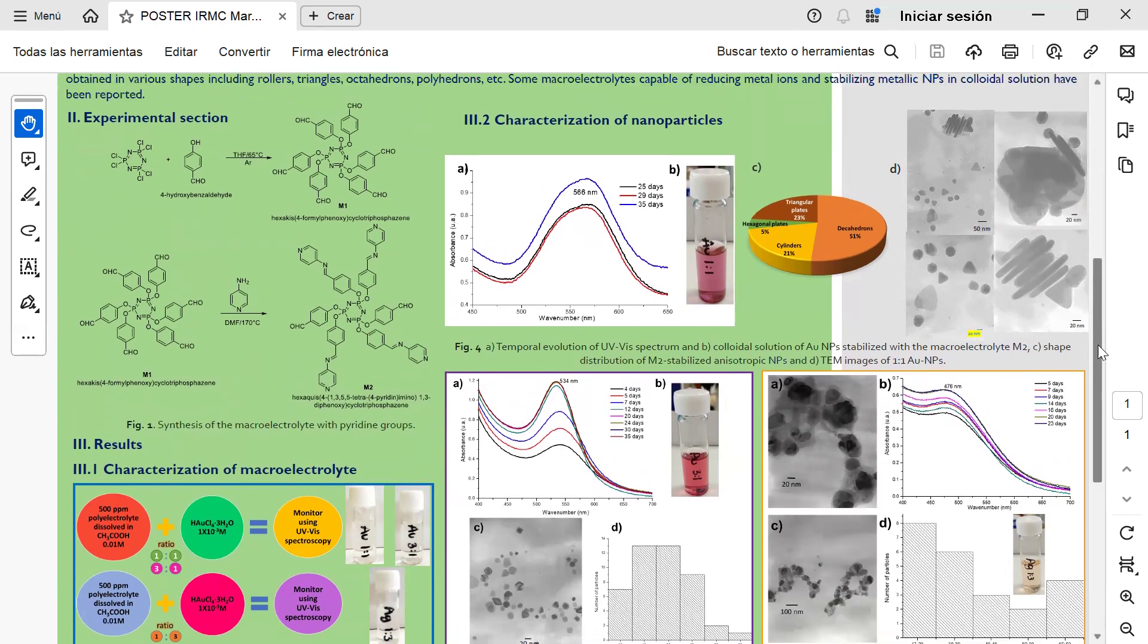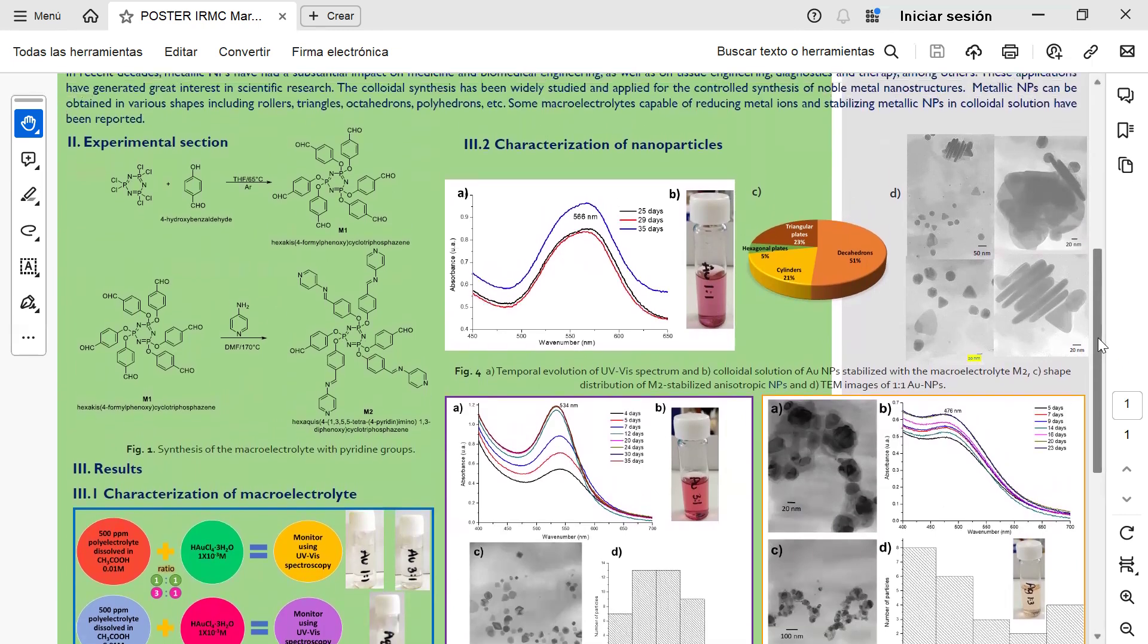The effect of the macroelectrolyte concentration on the synthesis of nanoparticles was analyzed using different volumes of macroelectrolyte and precursor salt. The ratios 1:1 and 3:1 were the ones that formed gold nanoparticles, while for silver nanoparticles the ideal ratio was 1:2:3.